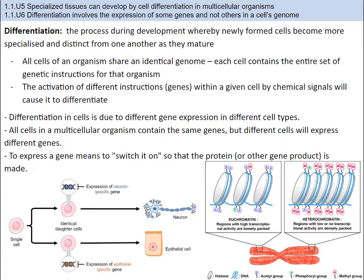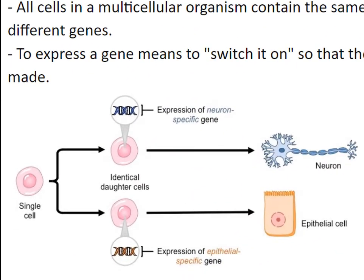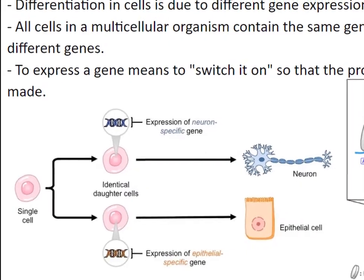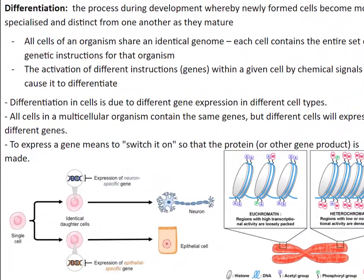In multicellular organisms, a group of cells that specialize in the same way and perform the same function is a tissue. Tissues form as cells specialize through differentiation — the process during development whereby newly formed cells become more specialized and distinct from one another as they mature. For example, brain cells, muscle cells, and lung cells have different structures and functions. This enables these cells to focus on fewer tasks and do the work more efficiently while saving energy, and they can also have specialized structures and metabolism.